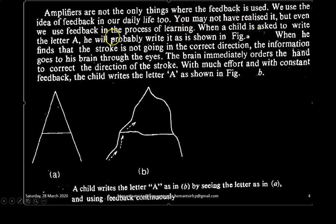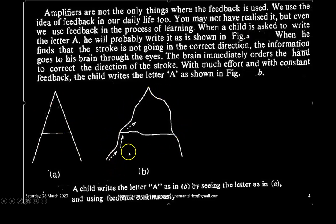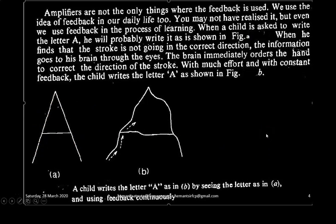You may not have realized it, but even we use feedback in the progress of learning. One example I had already given you; this is the second example. When a child is asked to write a letter A, he will probably write it as shown in figure A. When he finds that the stroke is not going in the correct direction, the information goes to his brain through the eyes, and the brain immediately orders the hand to correct the directions of the stroke. With much effort and with constant feedback, the child writes the letter A correctly. So initially when you start writing, you get those kinds of strokes, but when your brain receives feedback about it, it is corrected, and upon getting proper feedback, you will be writing the proper letter A in its proper format. This is the use of feedback in our daily life.